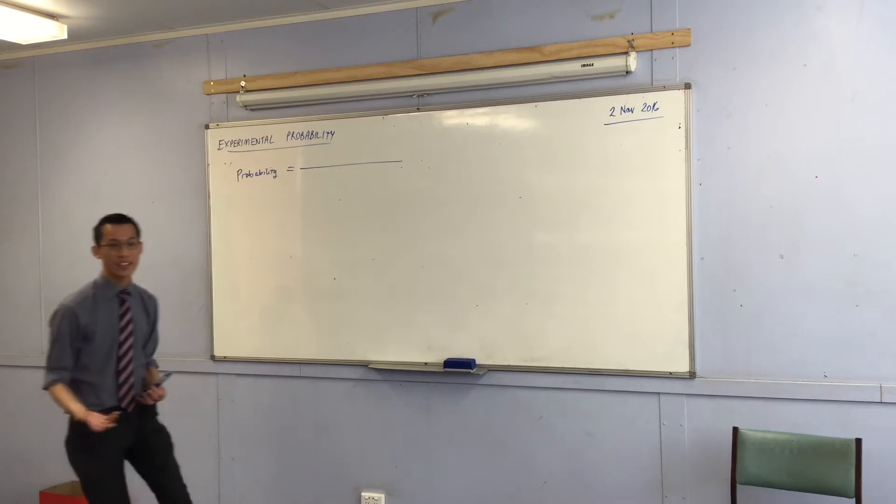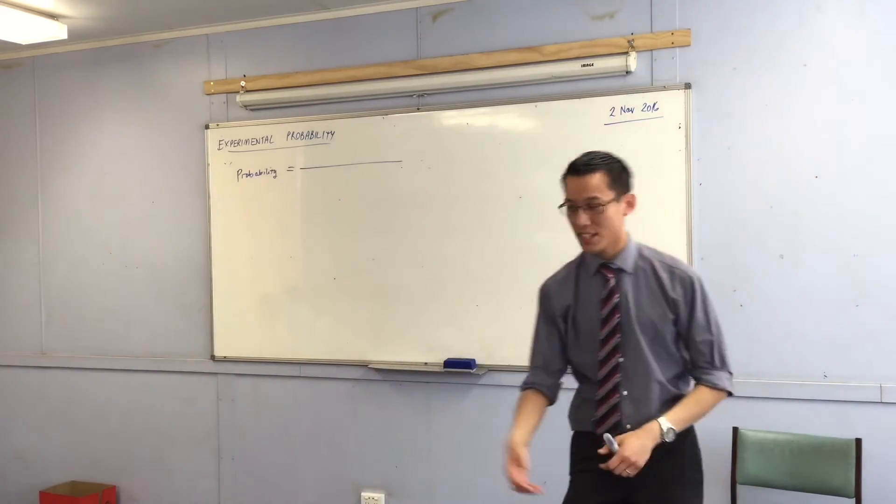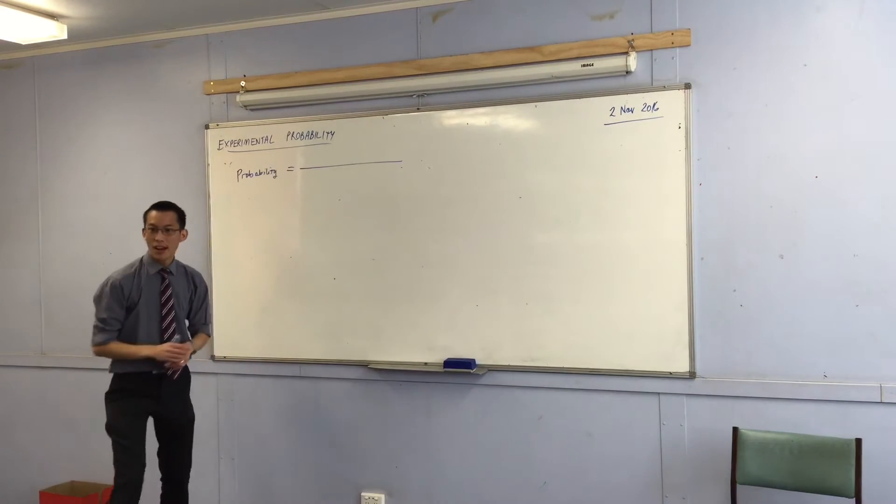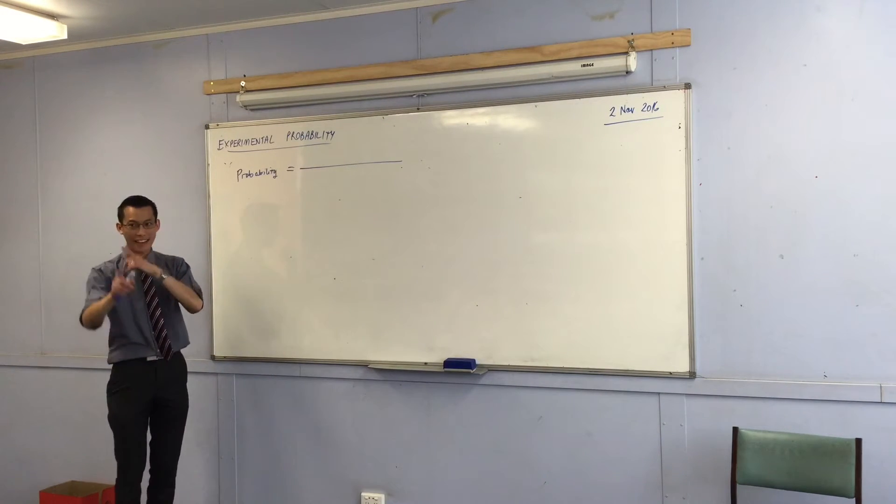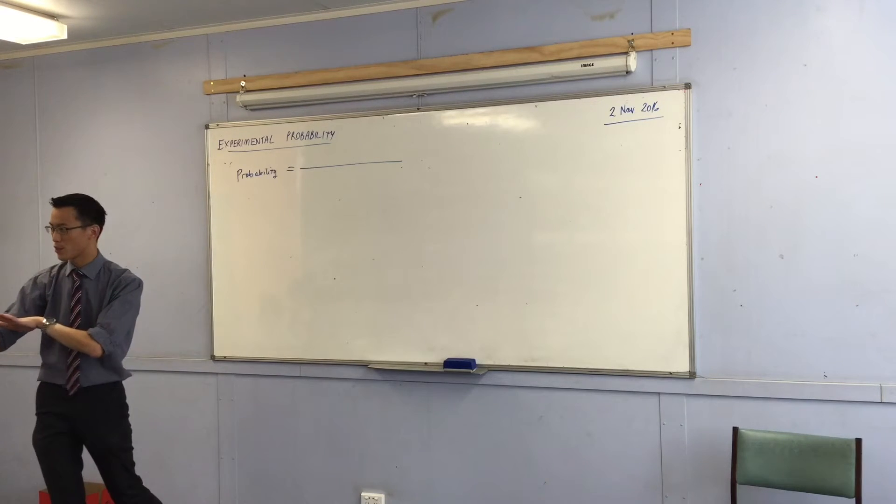If you want to work out the probability of flipping a head when you're flipping coins, right? Or rolling a six, how do you do it? What do you put on the top and the bottom? Rinesh? Sample space. Okay, so sample space. Something to do with sample space is really important to me.